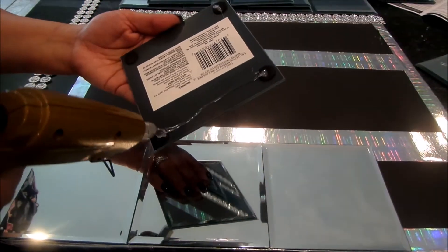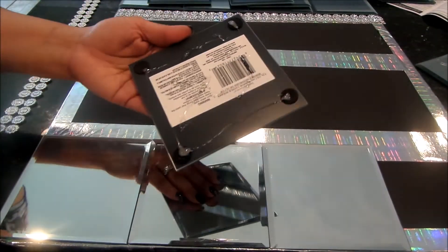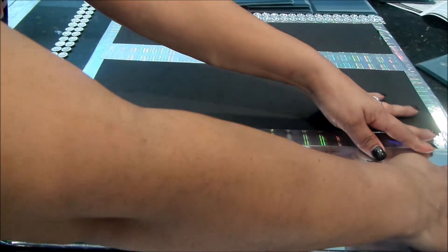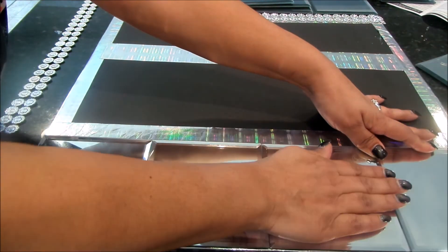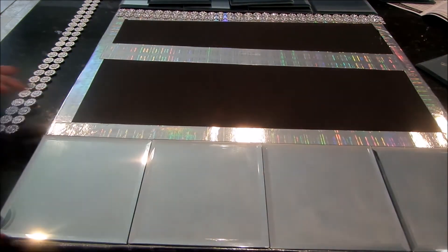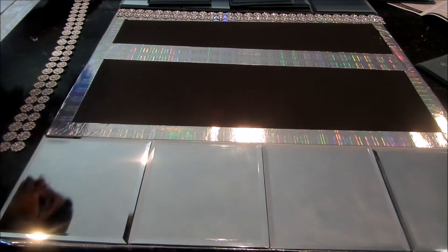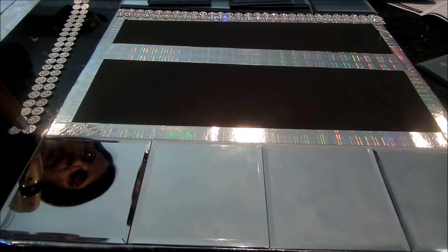And now it's time to glue the final pattern down. I'm only going to use the hot glue and not the E6000 because the hot glue is industrial enough and it will hold on the poster board.